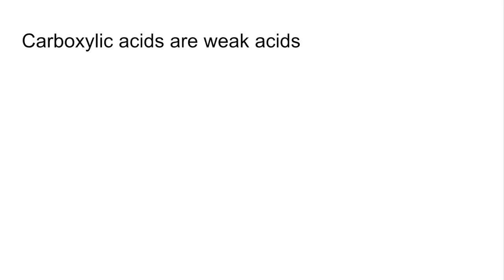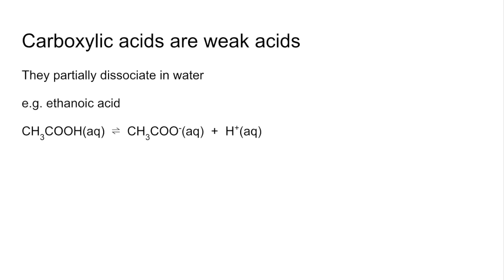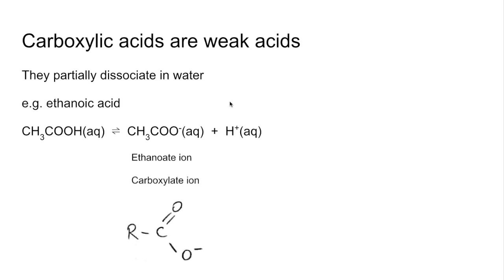Looking at their chemical properties: they are weak acids, so they partially dissociate in water. Using ethanoic acid as the example — when you put it in water, it partially dissociates into its ions; in other words, it releases the H⁺ ion. We have a reversible reaction set up, and the product is called the ethanoate ion, which is an example of a carboxylate ion.